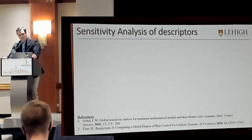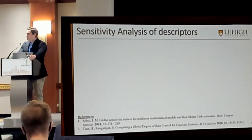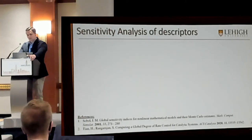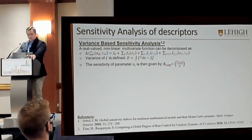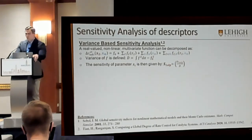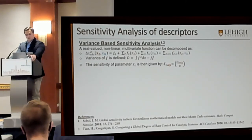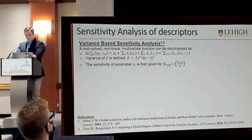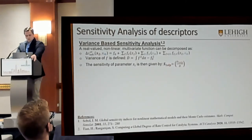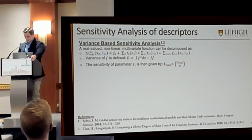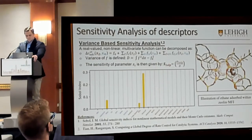We then looked at which descriptors were most important in predicting the model — specifically, why the neural network chooses particular descriptors and how they're used in predicting the entropy. The method we used is called a Sobol sensitivity analysis, also known as a variance-based sensitivity analysis. The theory behind this is that you can take any multivariable continuous function and separate it into a sum of orthogonal functions containing individual contributions. Here in red I have all of my zeolite descriptors, and in blue the molecular descriptors. We can then calculate the variance for each of these functions, and the sensitivity is simply the ratio of that individual descriptor's variance over the total variance of the function.